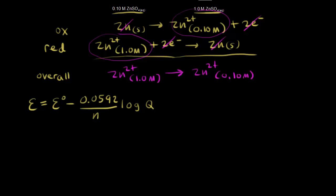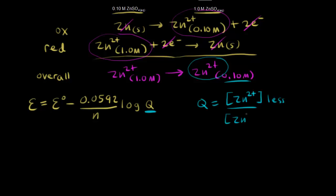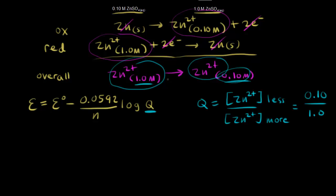What would Q be for our concentration cell? Q equals the concentration of zinc 2+ on the less concentrated side over the concentration of zinc 2+ on the more concentrated side. Right now, that would be 0.10 over 1.0.